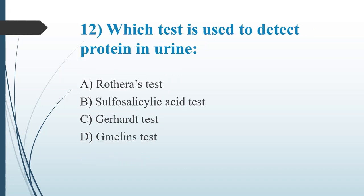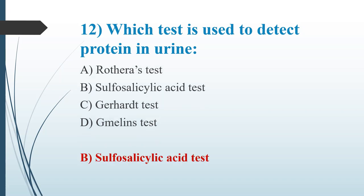Twelfth question: Which test is used to detect protein in urine? Option A: Rothera's test. Option B: Sulfosalicylic acid test. Option C: Gerhardt test. Option D: Gmelin's test. The answer is Option B, sulfosalicylic acid test. Rothera's test is used to detect ketone bodies like acetone and acetoacetic acid. Gerhardt test is also used for ketone body detection, mainly acetoacetic acid. Legally's test detects acetone, and Hart's test detects beta-hydroxybutyrate. Gmelin's test is used to detect bile pigments in urine.